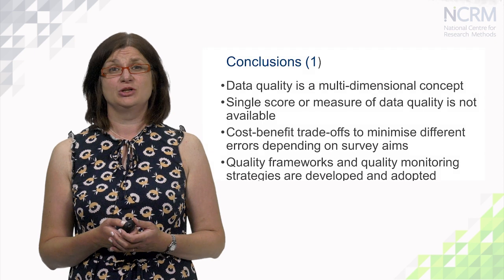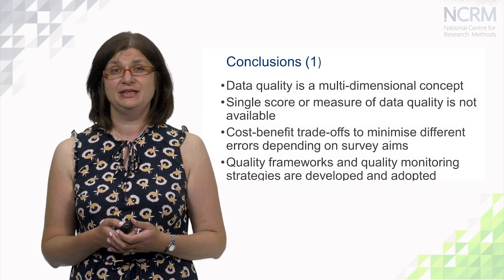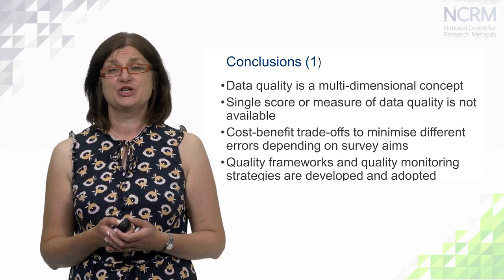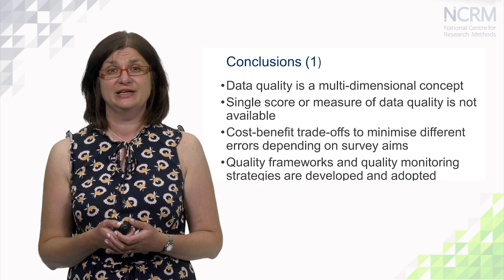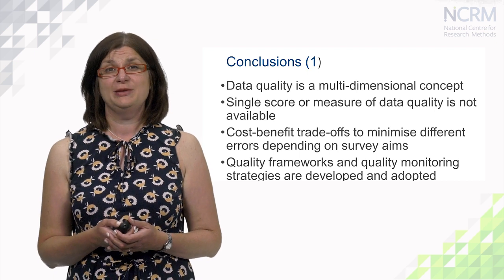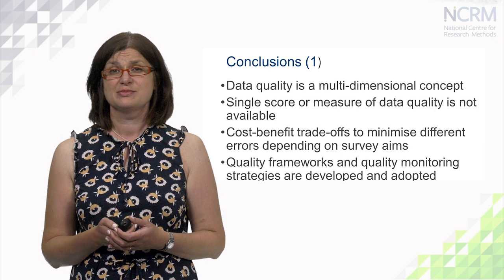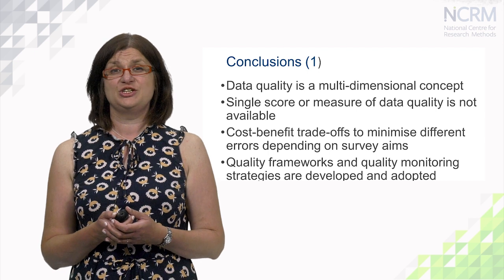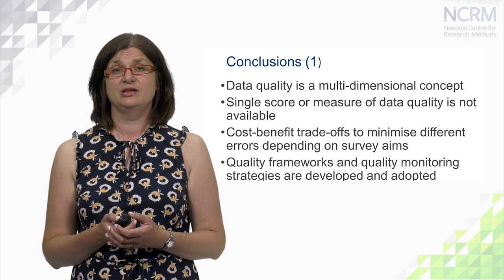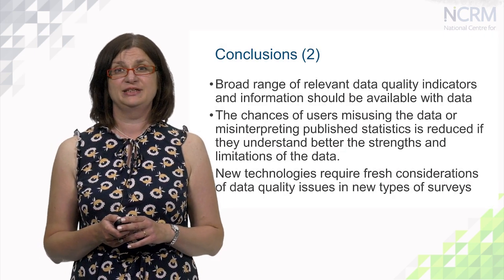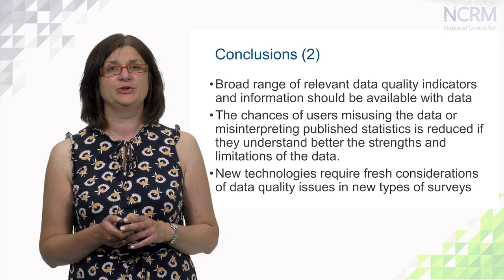To conclude: data quality is a multi-dimensional concept, with the statistical dimension — particularly accuracy — being the main dimension. A single score or measure of total survey quality is not available. Cost-benefit trade-offs are needed to minimize different errors depending on survey aims and survey budget. Quality frameworks and quality monitoring strategies are developed and adopted by different statistical organizations. It is very important that a broad range of relevant data quality indicators is available together with the data.